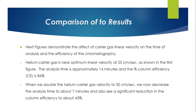The next figures demonstrate the effect of carrier gas linear velocity on analysis time and chromatographic efficiency. Helium carrier gas near its optimum linear velocity at 25 cm/sec, as shown in the first figure, gives an analysis time of approximately 14 minutes and a percent column efficiency (CE) of 86%.